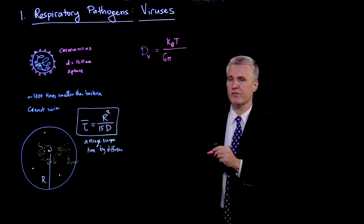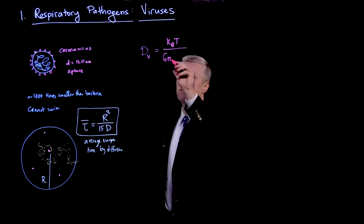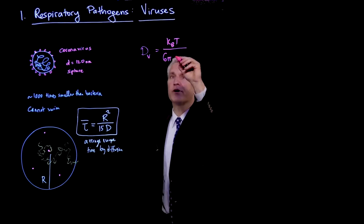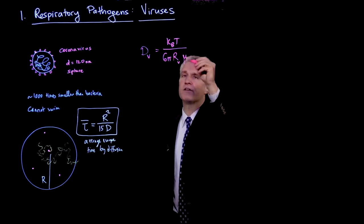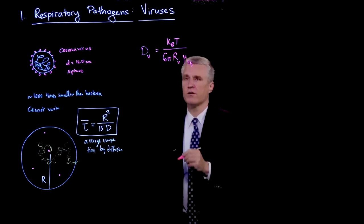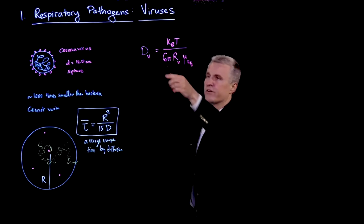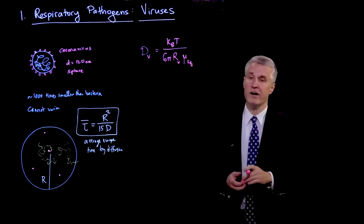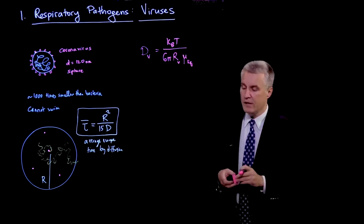So kT is the thermal energy of the fluctuations. And that's divided by 6 pi times the radius of the virus, and then the viscosity of the liquid or fluid containing the droplet. So essentially, this denominator here is the Stokes-Drag coefficient for a sphere fluctuating in a viscous medium. So that's the diffusivity.